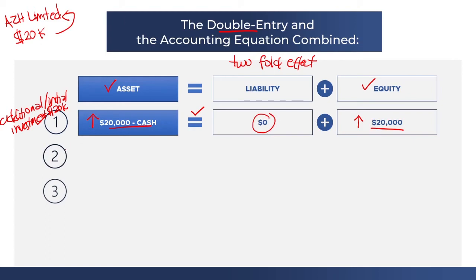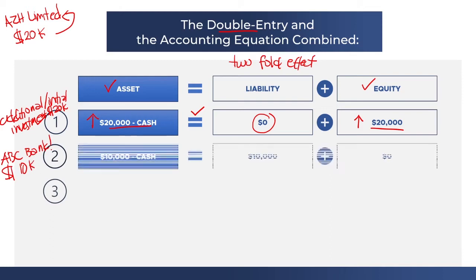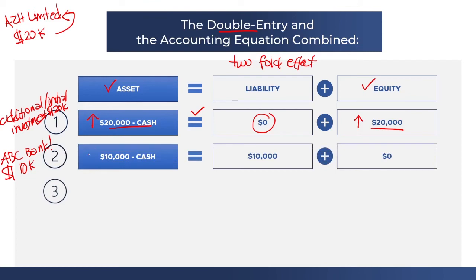In the second part of the story, to have more capital, you needed to borrow money from ABC Bank — specifically $10,000 — to finance some of your operations. The double-entry now shows two things affected: your assets and your liability. Because you borrowed money from the bank, your cash increased by $10,000, your assets increased by the same amount, and now your liability also increased by $10,000. The accounting equation still holds: assets equal liabilities plus equity.